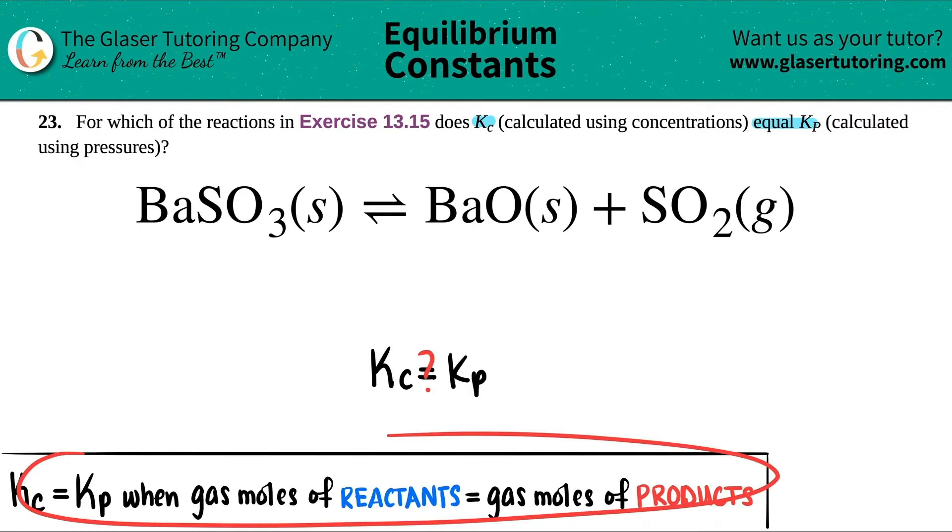Here's the information that we need. When a Kc value equals a Kp value, the gas moles of the reactants equal the gas moles of the products, but it's very specific. It's only the gases that count.